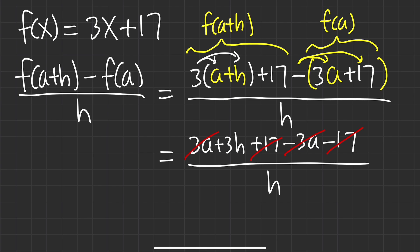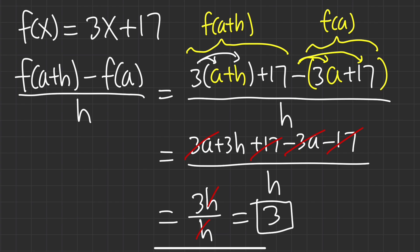You can cancel out the h right now. We have 3h over h, and canceling the h gives a final result of just 3. Whenever you are finding the difference quotient of a linear function in y equals mx plus b form, the slope equals 3, and for a linear function the slope — and therefore the difference quotient — will always equal the slope, which in this case is 3.